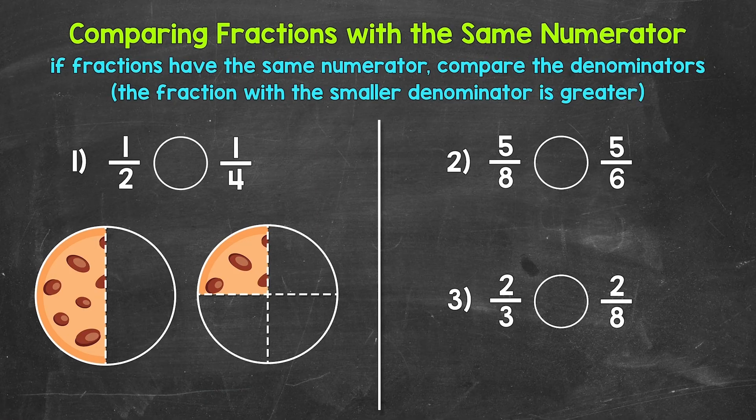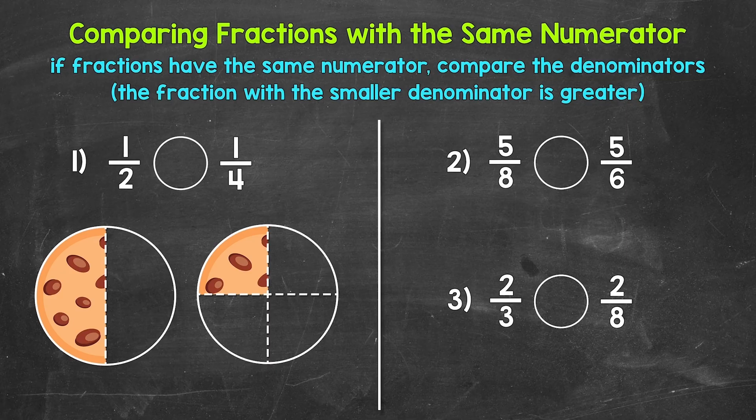Now let's take a look at how to compare fractions with the same numerator. Let's jump into number one where we have one-half and one-fourth. Reading this comparison from left to right: one-half is greater than, less than, or equal to one-fourth. So which fraction here is greater? Now, if fractions have the same numerator, all we have to do is compare the denominators — the bottom numbers. The fraction with the smaller denominator is greater.